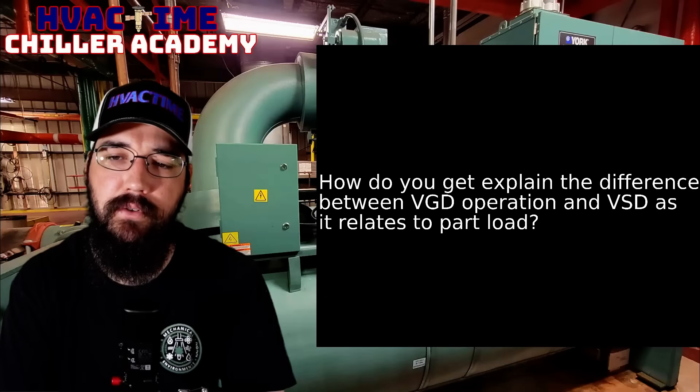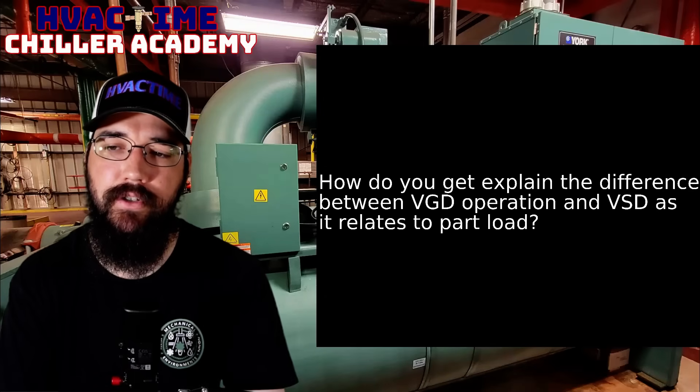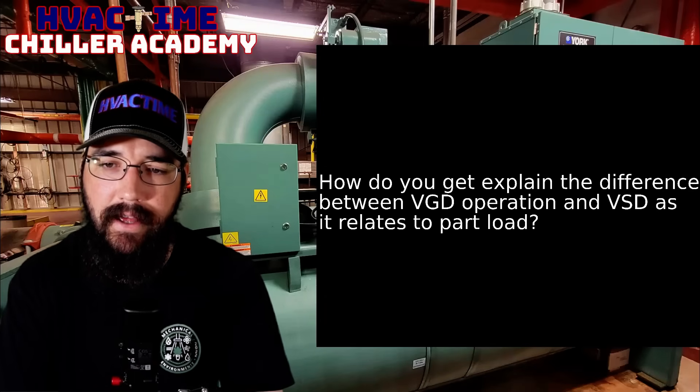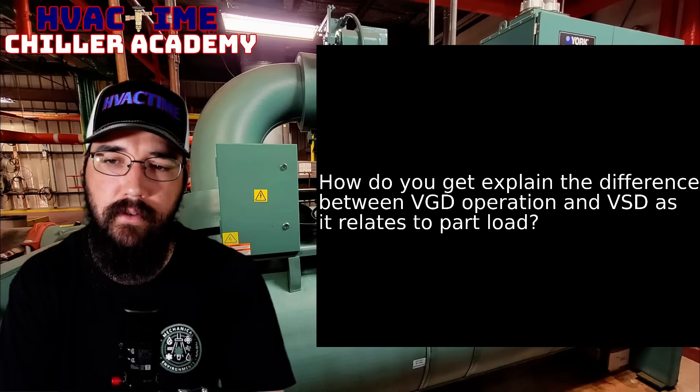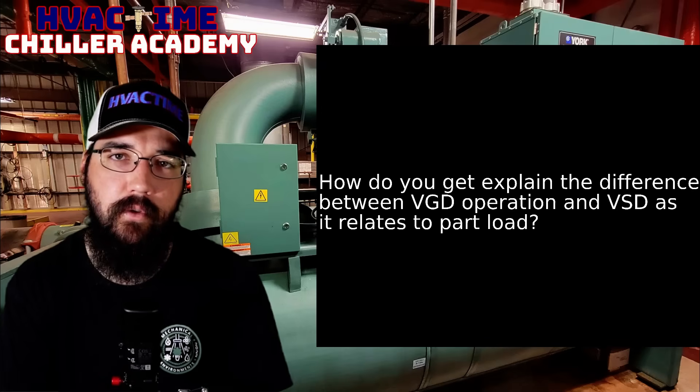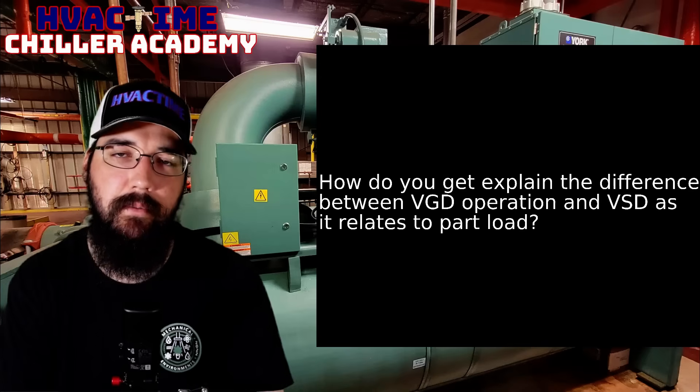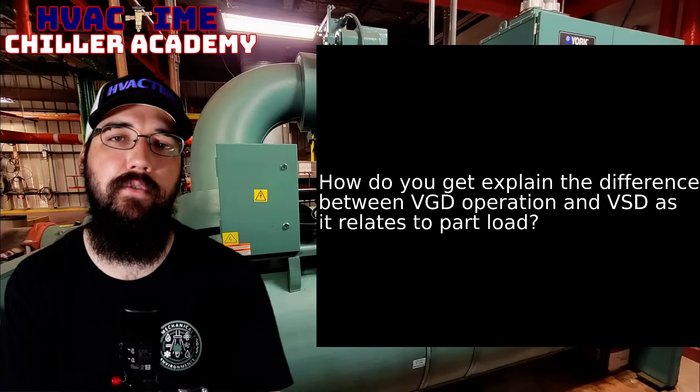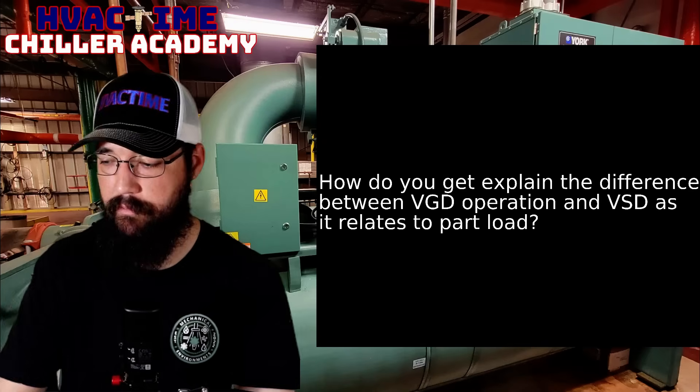How do you explain the difference between VGD operation and VSD as it relates to part load? To separate the two real quick, your VGD is a variable geometry diffuser that is in the diffuser section coming out of the compressor.